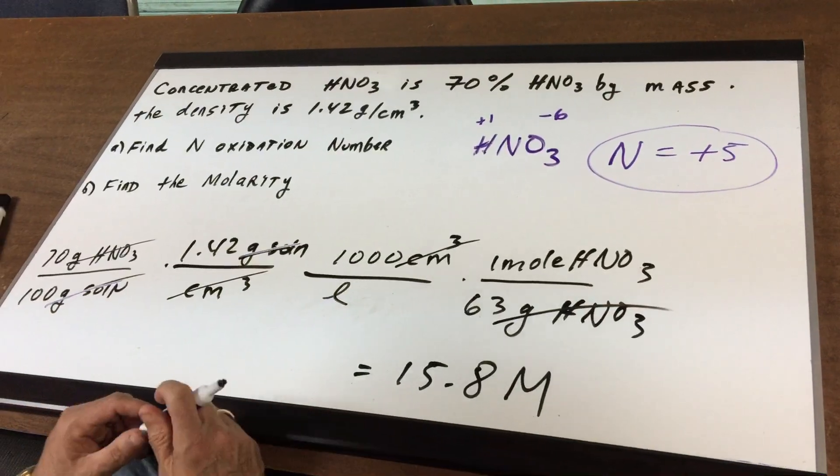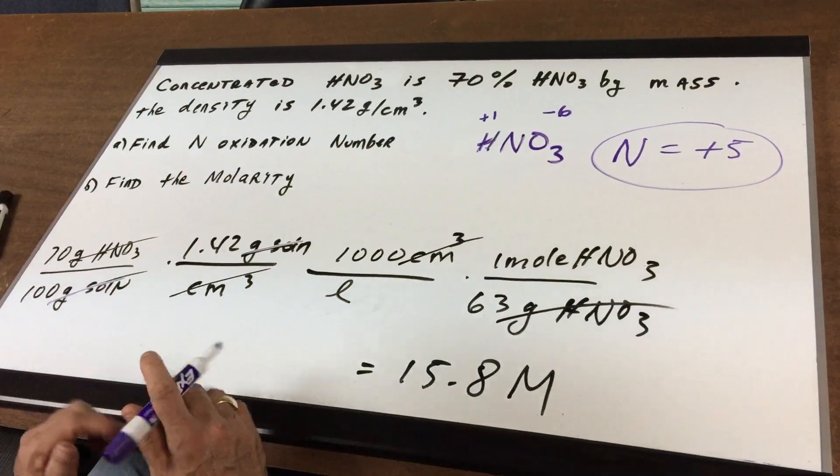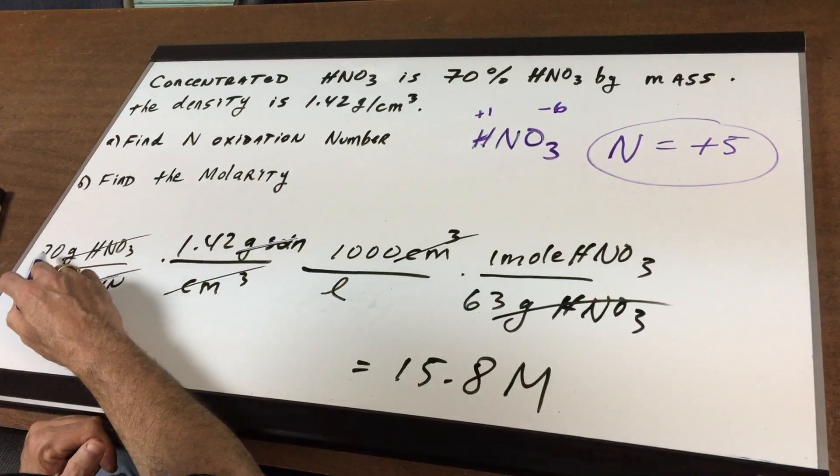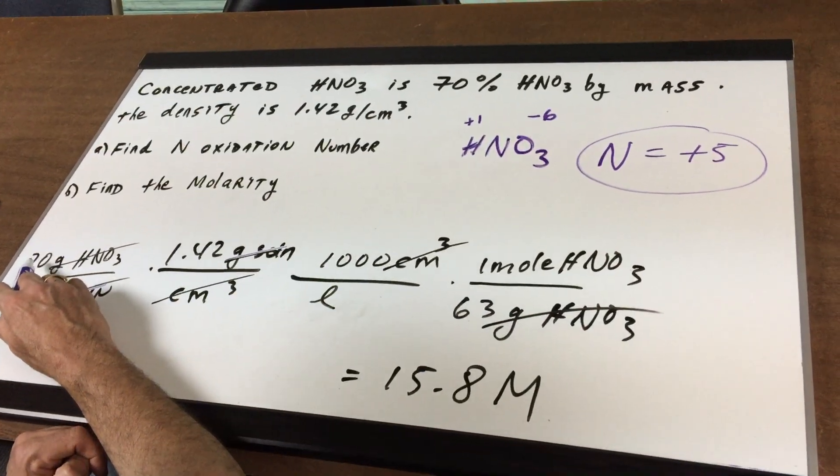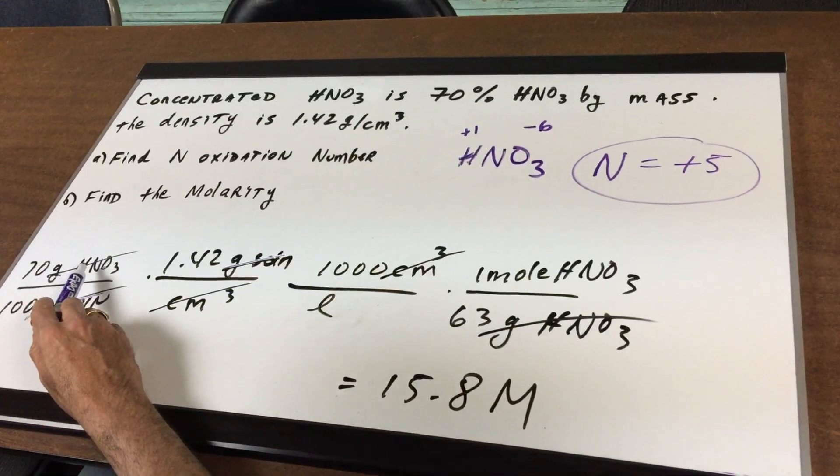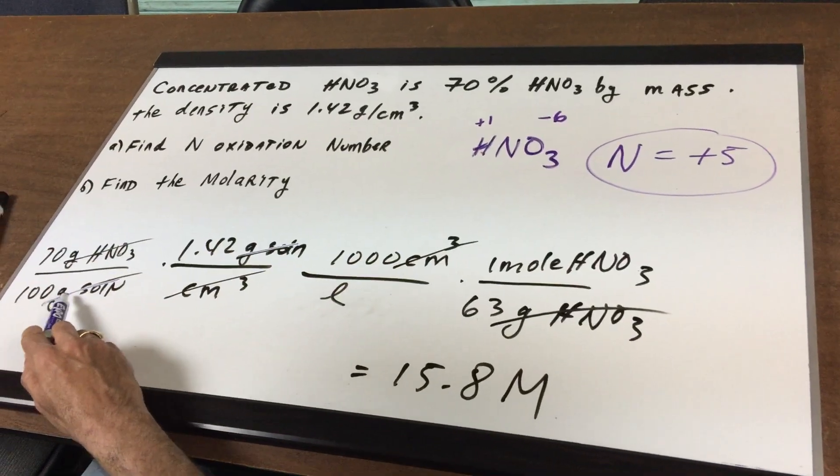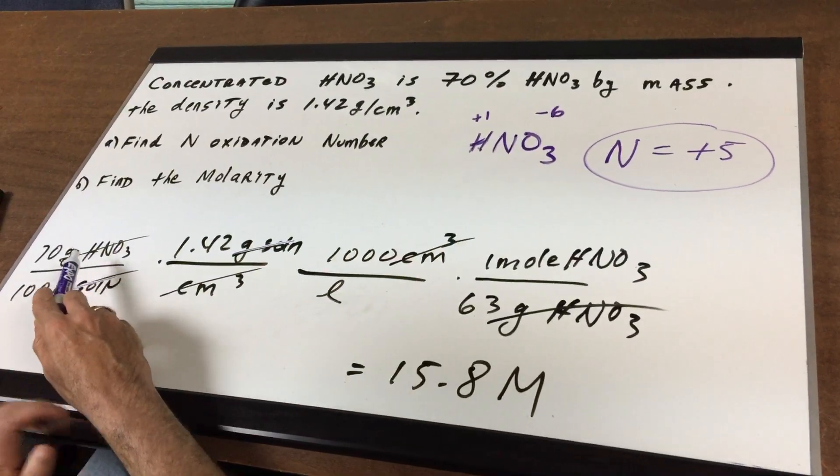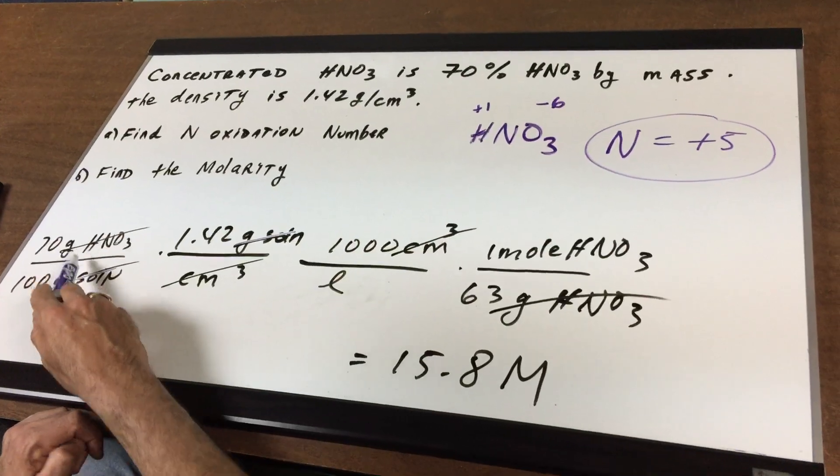This is a little more challenging because we want to get it in moles per liter. I'm going to first write down 70% as 70 grams of nitric acid in 100 grams of solution. Now remember, this is grams and this is grams.